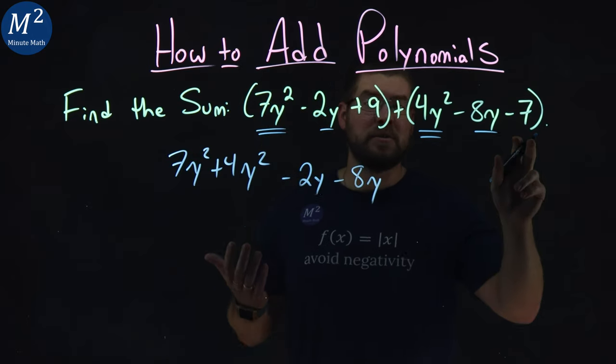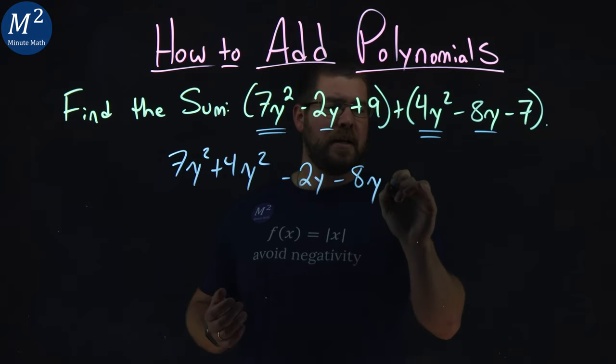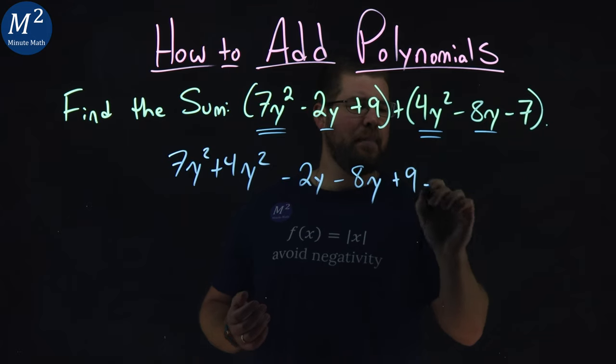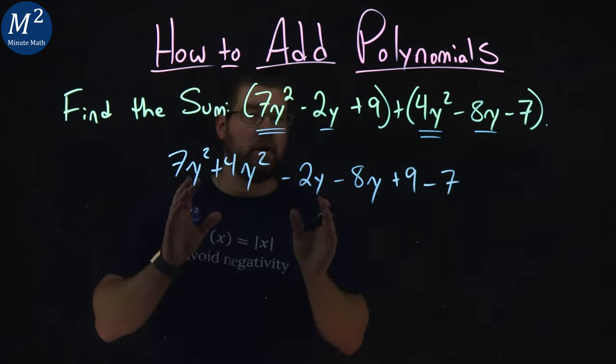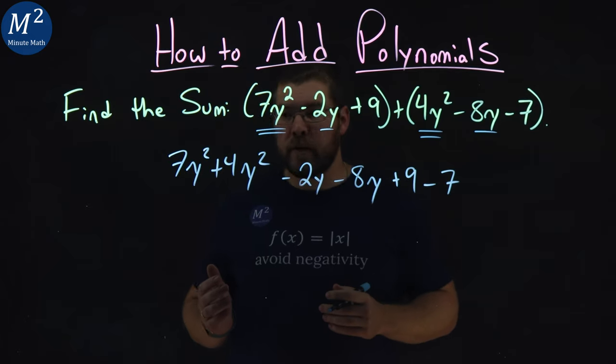Lastly, we have our normal numbers: plus 9 and minus 7. Now we've rearranged this to have our like terms next to each other. Let's simplify.